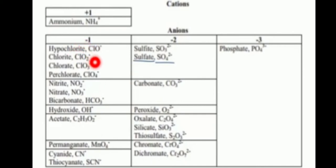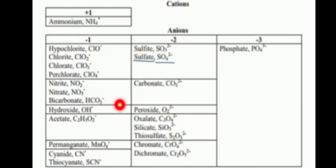Anions with charge minus one include: hypochlorite CLO-, CLO2-, CLO3-, CLO4-; NO2- nitrate, bicarbonate, hydroxide, acetate, permanganate MnO4-, cyanide, and thiocyanide — all charge minus one.